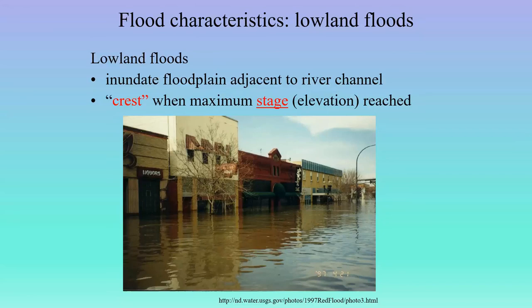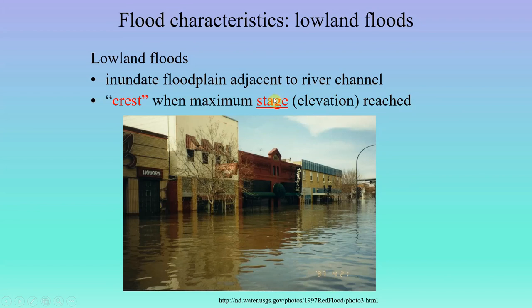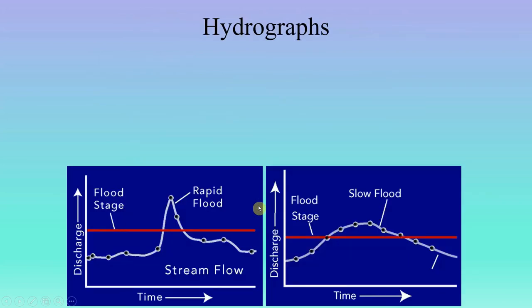Flooding will inundate whatever floodplain is adjacent to the river channel. In high mountainous areas there's not much floodplain because you have steep V-shaped canyons. But here we have big broad floodplains and the water will spread out and slowly rise. A flood is said to crest when it reaches its maximum stage — its maximum elevation or height. Stage is basically a measure of how high the water is in the river channel. The higher the stage, the larger the flood.